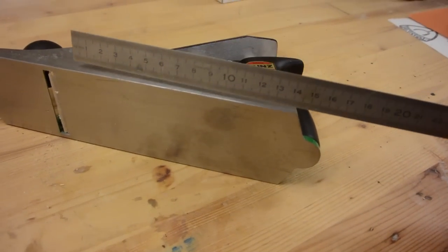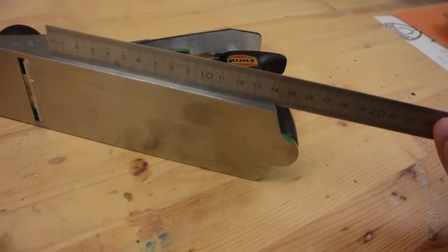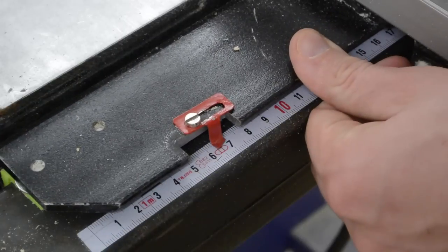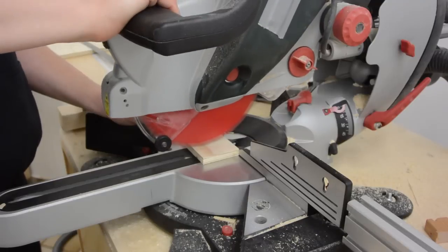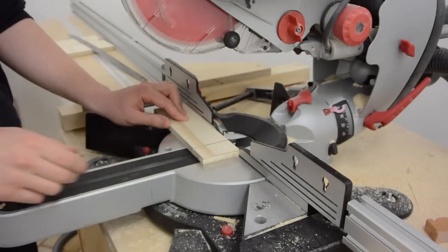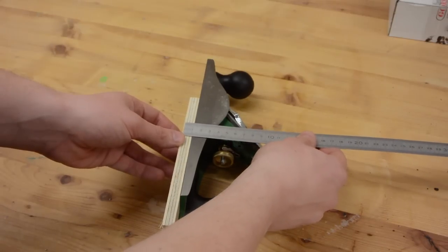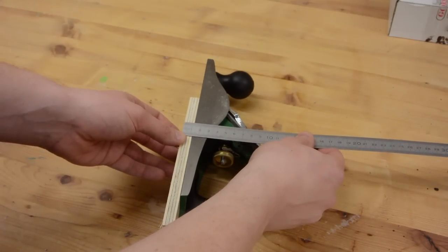I start by taking some measurements of the sole and then cut the bottom piece to size. Now I can determine the width of the sides and cut those.